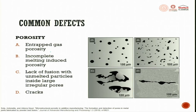Entrapped gas pores appear as very nice circular ones. And incomplete melting induced pores - these can be because of lower power, faster movement rate, or surface viscosity change. Next is lack of fusion, with unmelted particles inside large irregular pores - you can see these are powder particles getting locked inside the pores that were not involved in melting.